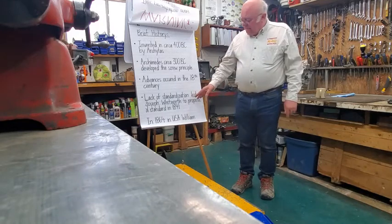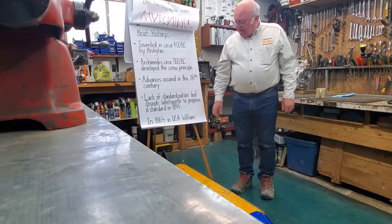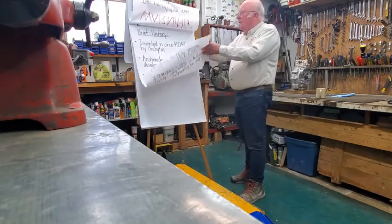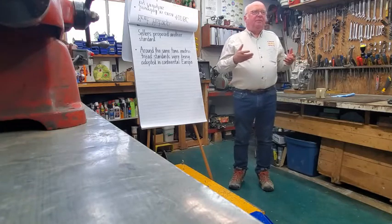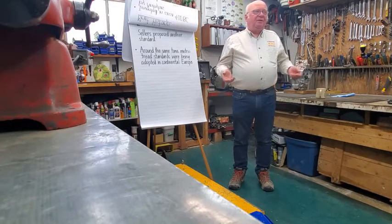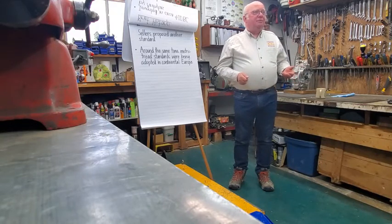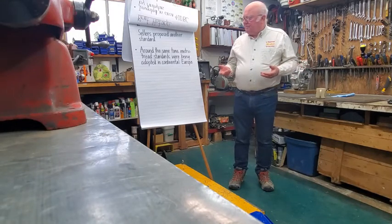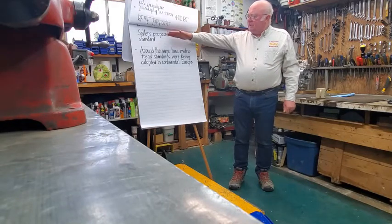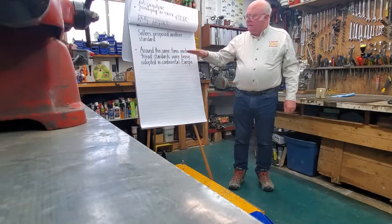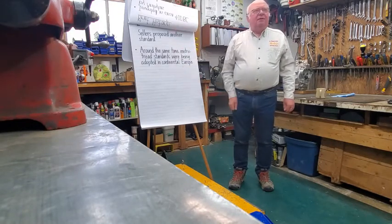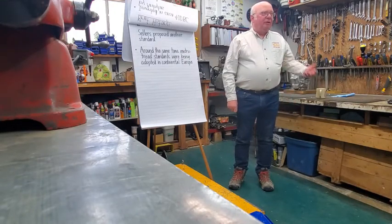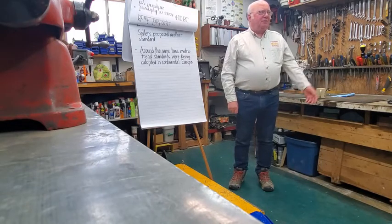That became the Whitworth thread, which is the coarse thread. About the same time, or just after that, in the USA, William Sellers proposed another standard — what everyone knows as the American UNF, UNC, or SAE, also called AF or Cross Flats. At the same time in France and continental Europe, the metric thread standards were being developed. So it all happened in the mid-1800s in amongst the Industrial Revolution, and you end up with the threads that everyone is familiar with now but gets totally confused about.